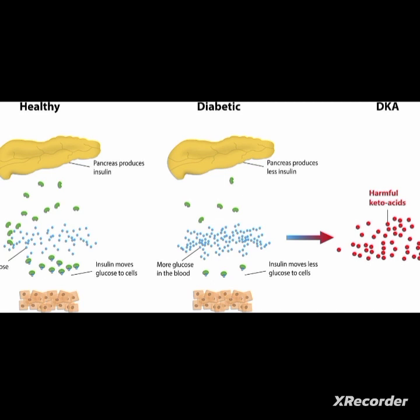In a healthy person, when glucose is present, insulin is produced and helps move glucose into the cell. In diabetic patients, insulin production is insufficient, so there are increased glucose molecules that cannot move into the cells, resulting in elevated blood glucose levels.